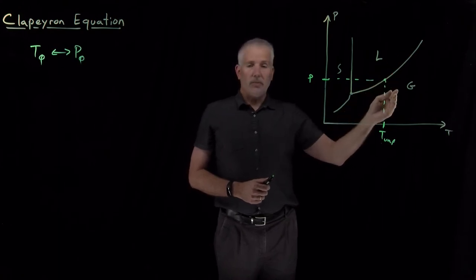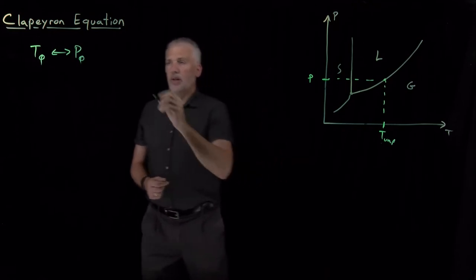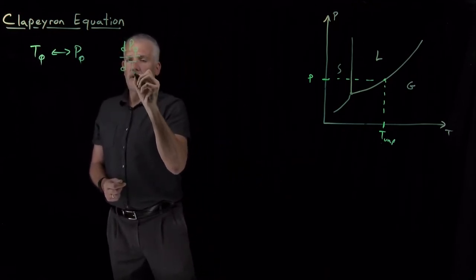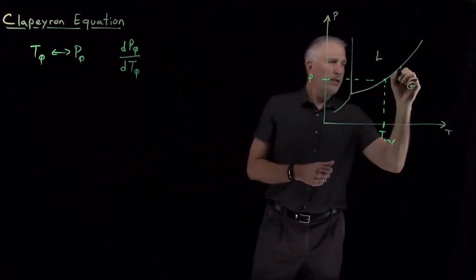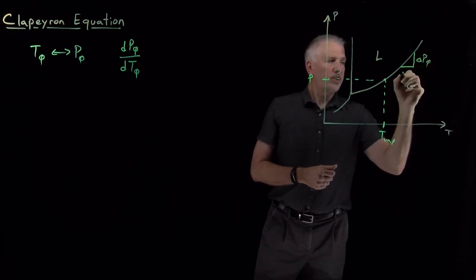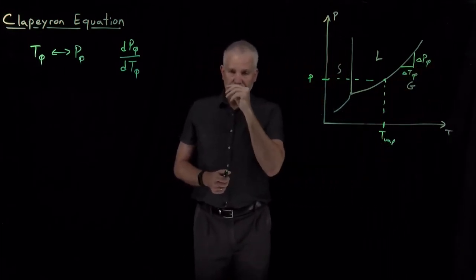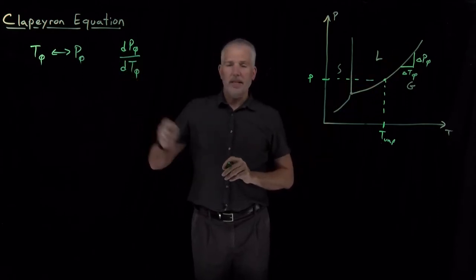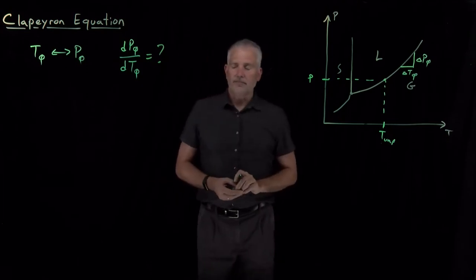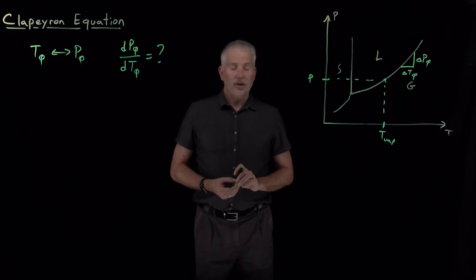How many degrees should we expect the boiling point to rise when we increase the pressure by a certain number of atmospheres? So we're asking: by how much should the boiling point change when I change the pressure, or vice versa? The slope of that curve would be dP/dT, so we're interested in knowing what that slope is and how to determine it mathematically.